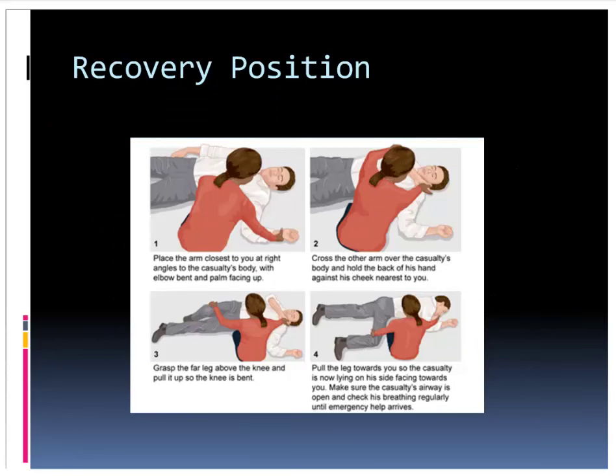Placing a patient in the recovery position is fairly simple. Place the arm closest to you at a right angle and the one farthest from you across their chest. Slowly and cautiously roll them onto the side of the right-angle arm until their head is tilted over that arm, allowing fluid to drain out of their mouth and keeping their airway open. This goes against immobilization and cervical spinal precautions, but during the START triage phase of an MCI we don't have the time or resources to dedicate manpower to that.